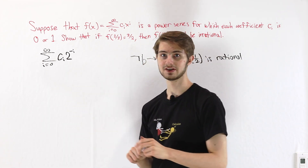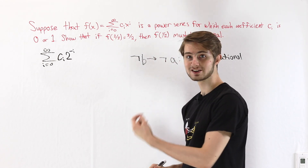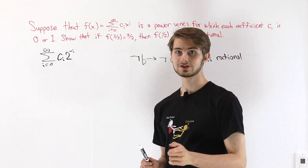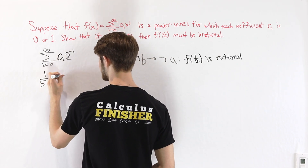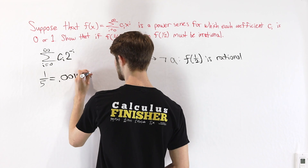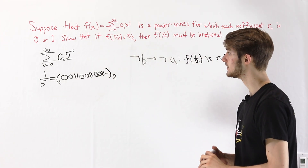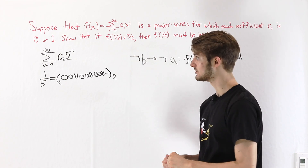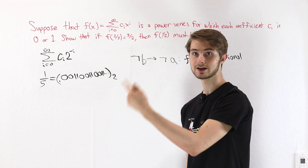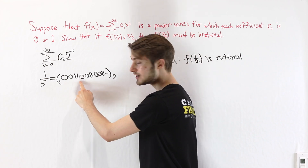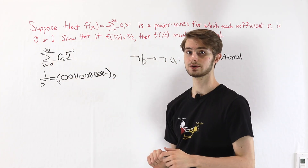There's actually another way to interpret this sum: it is the expansion of a particular number in binary. For example, 1/5 as a decimal fraction is the same thing as 0.00110011... in binary, which is base 2. We can write this as 0 times 2^(-1) plus 0 times 2^(-2) plus 1 times 2^(-3) plus 1 times 2^(-4), and so on. In each case, the coefficients are either 0 or 1.